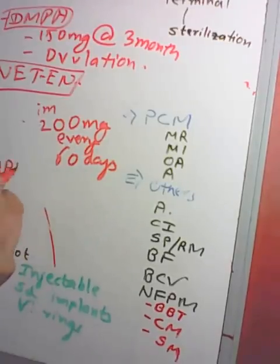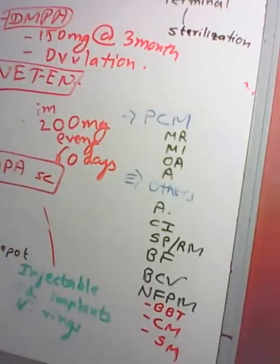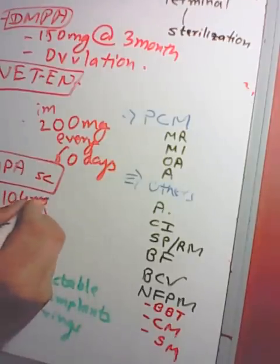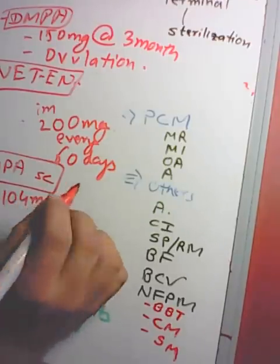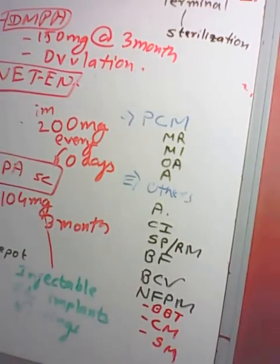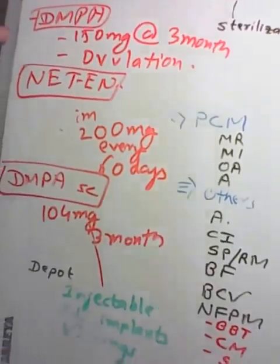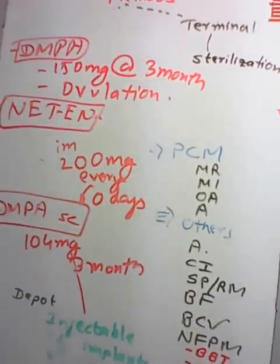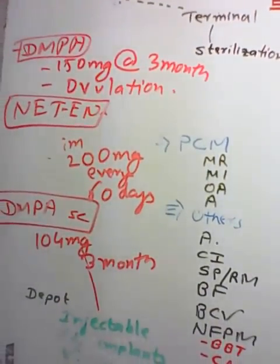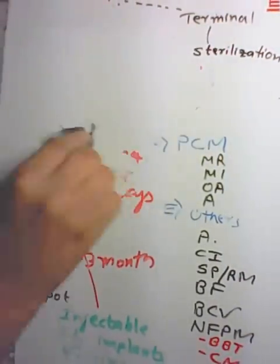DMPA subcutaneous (DMPA-SC) is given as 104 mg of DMPA at 3-month intervals, as opposed to the intramuscular formulation of 150 mg every 3 months.